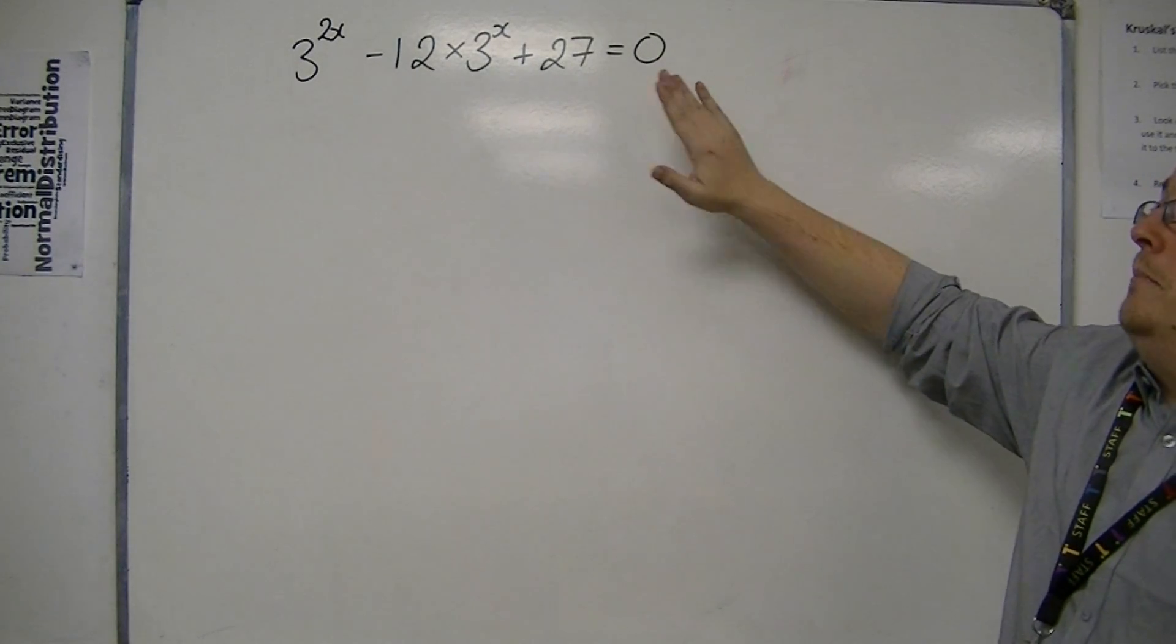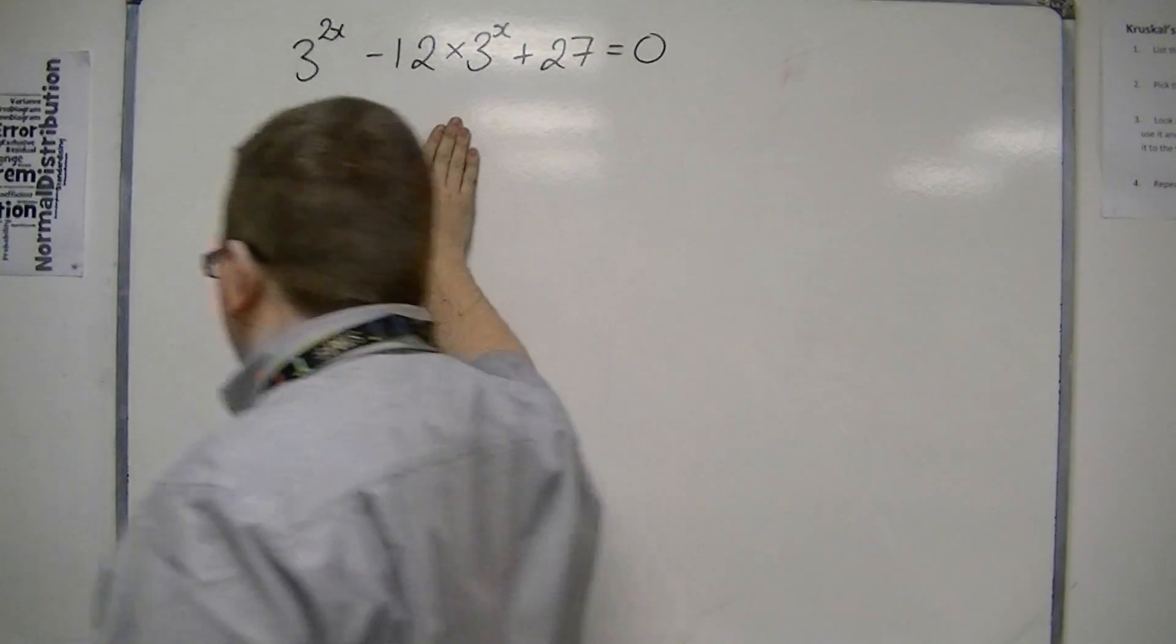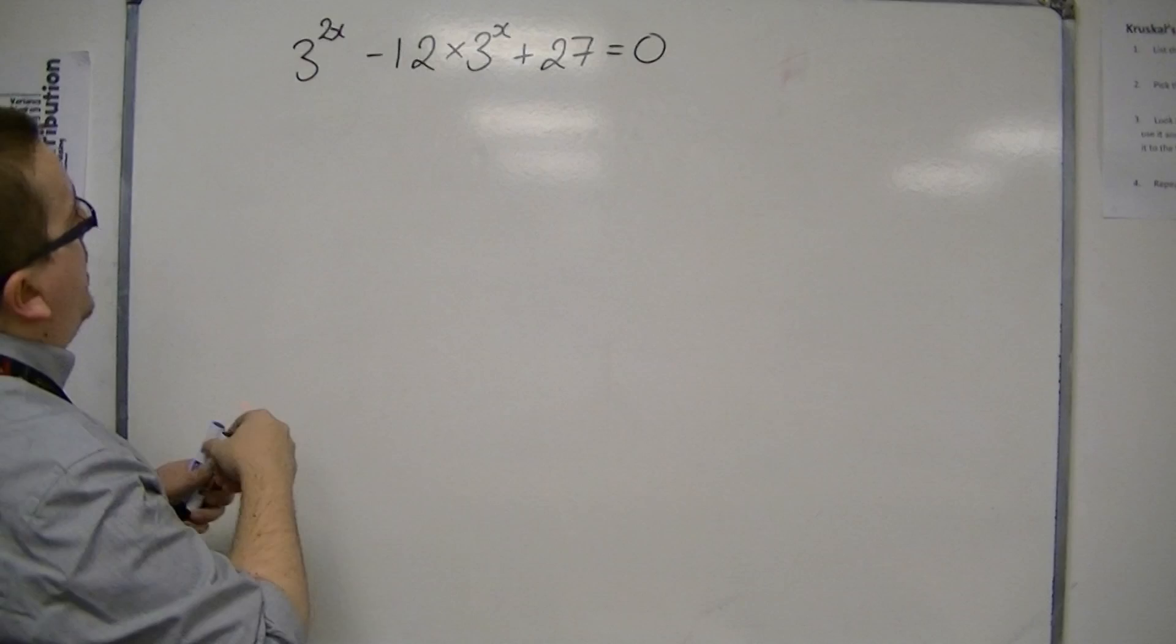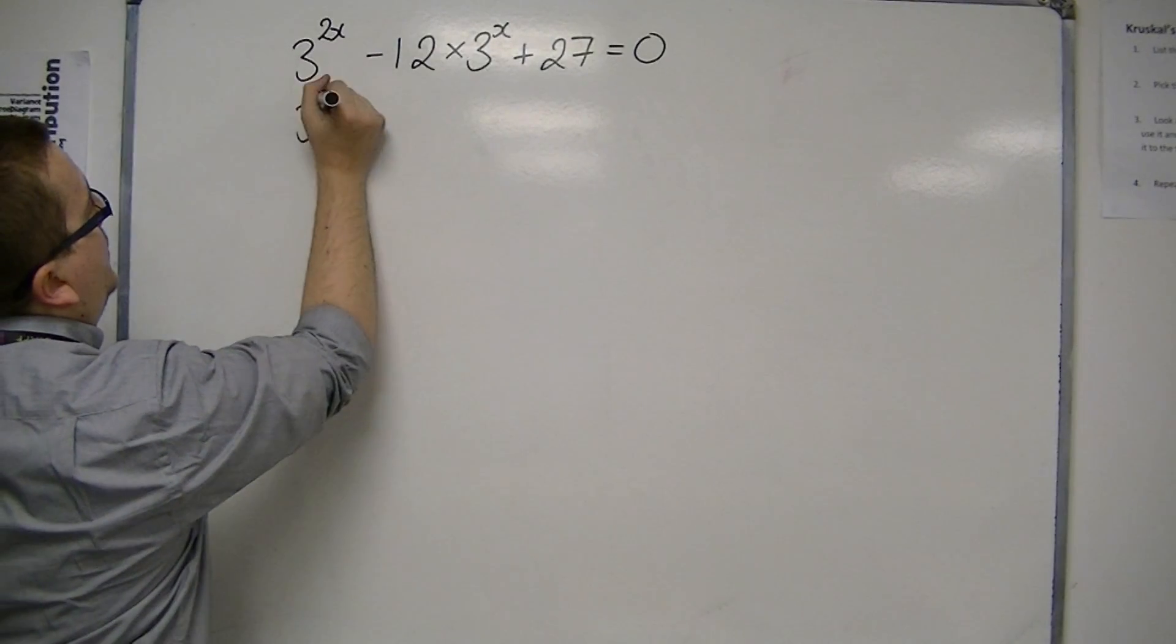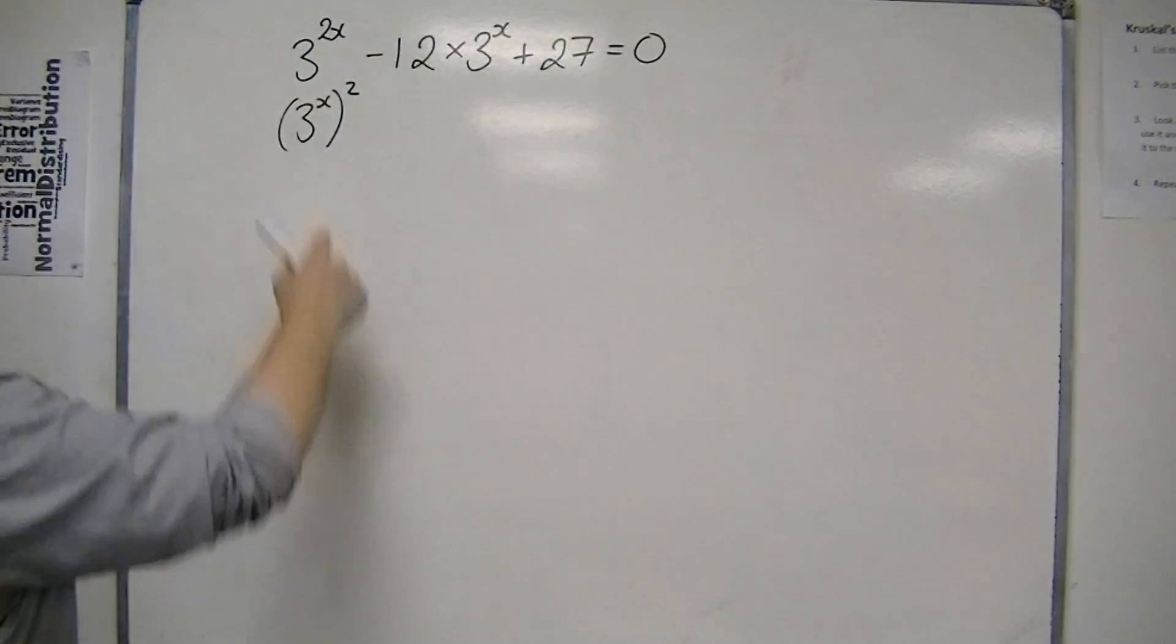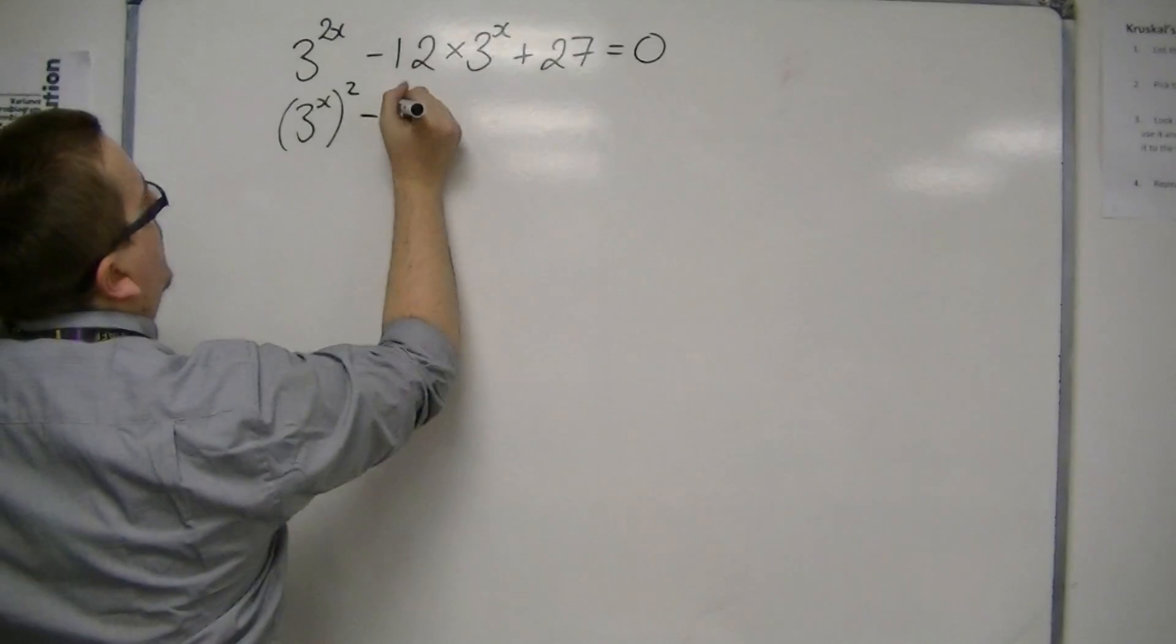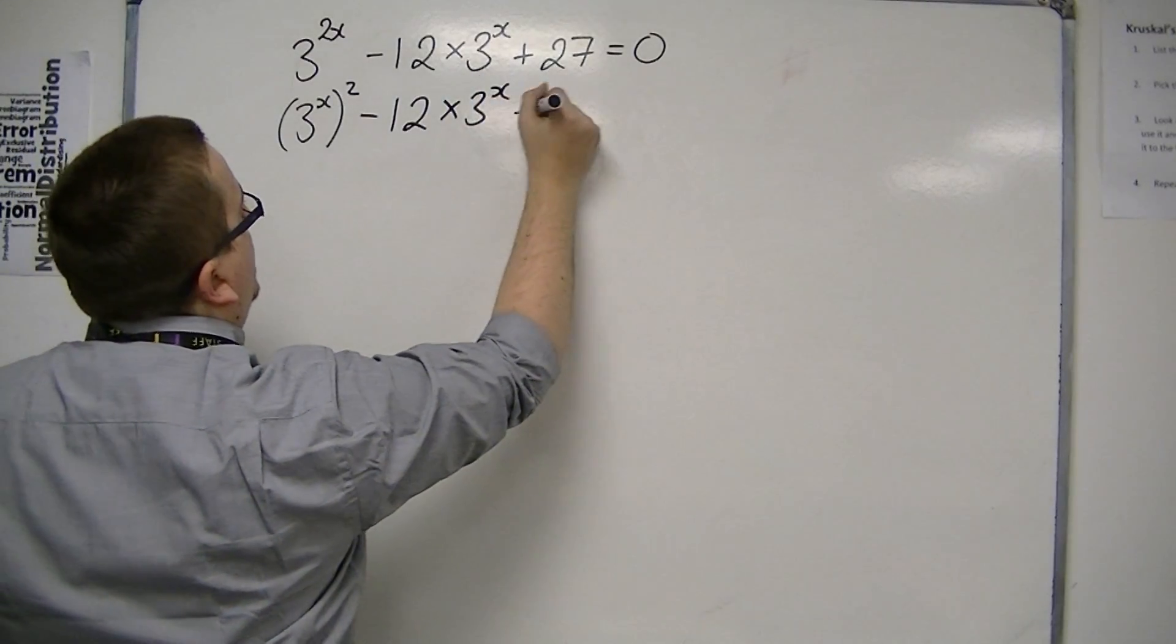Now, it may not seem like a quadratic equation just yet. What I'm going to do to start off with is to write the 3 to the 2x as 3 to the x squared. That's a valid move, because x times 2 is 2x. So, take away 12 times 3 to the x plus 27 is 0.